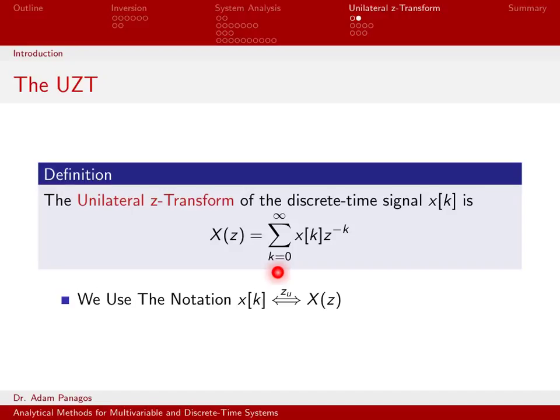The only real difference between this and the bilateral Z-transform is when we start talking about its properties, and namely, the shifting, time-shifting properties. The time-shifting properties for the unilateral Z-transform are the ones we really need to look at in terms of comparing it to the original transform. They're really the only ones that are different. So we'll do that next.